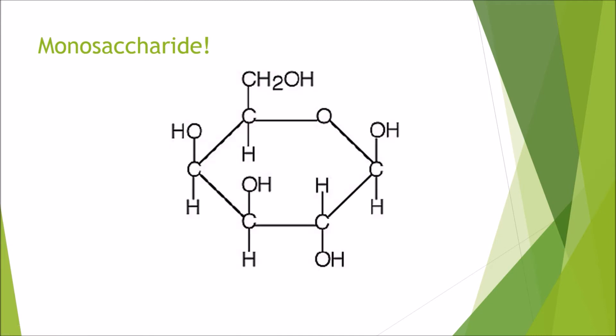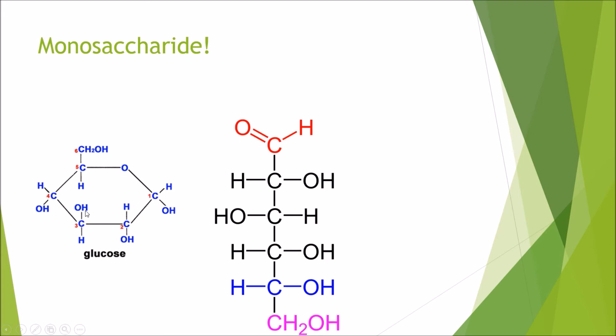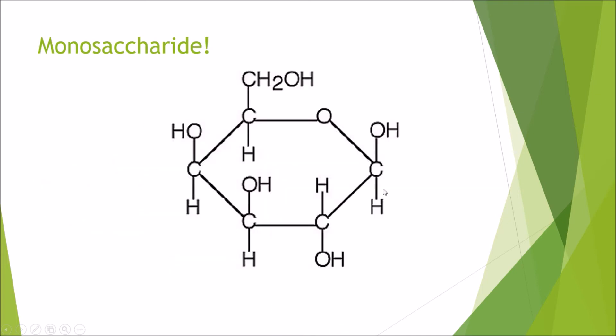Then last but not least, we've got galactose. This is really similar to glucose in structure, but the only difference is, on this one, all the OHs are pointing up except for this one where it's pointing down. So if we go back to glucose, all of them are pointing down except for this one. Whereas with galactose, all of them are pointing up except this one. That's the little difference between glucose and galactose.